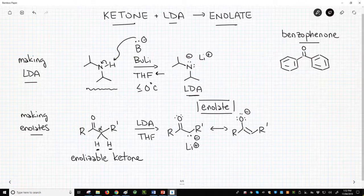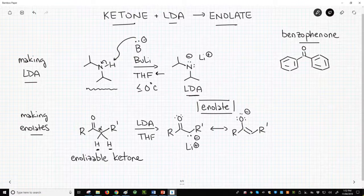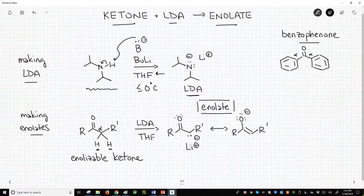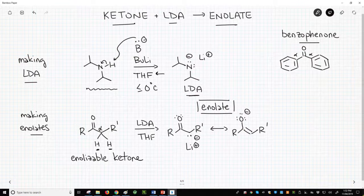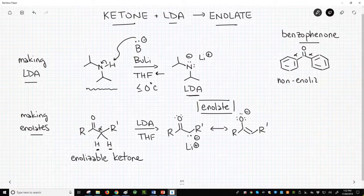For example, if we look to the upper right of the screen, I've drawn a ketone. It's called benzophenone. Benzophenone does not have any hydrogens on its alpha carbons. The carbons onto either side of the carbonyl, so you can't make an enolate from benzophenone. This is non-enolizable.